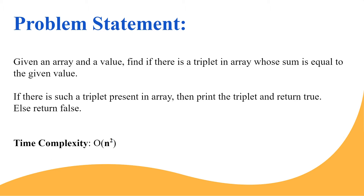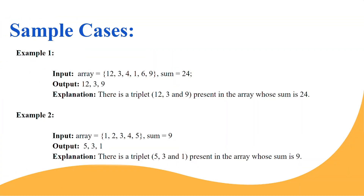The time complexity required is O(n²) — not O(n³) or anything greater. So the problem is: given an array and a value, find if there are any three elements whose sum equals the given value. For example, if the array contains 12, 3, and 9, and the sum is 24, then 12 + 3 + 9 = 24, so we return true with those three elements as the triplet.